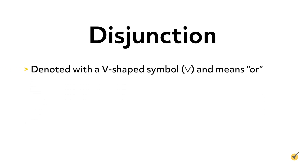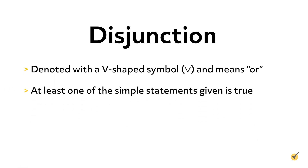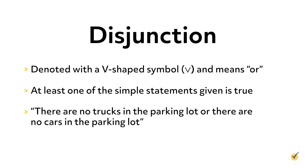The third logical operator is disjunction, which is denoted with a V-shaped symbol and means OR. If you guessed that disjunction is quite like the union of sets, you would be quite right. Disjunctions are satisfied when at least one of the simple statements given is true. For example, if we say 'there are no trucks in the parking lot or there are no cars in the parking lot,' then we are correct as long as one or both of those are true. We are only wrong if both simple statements are false.